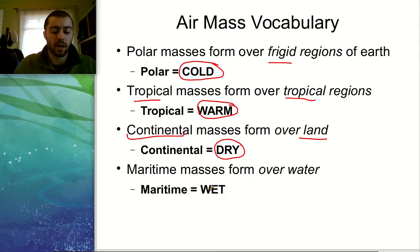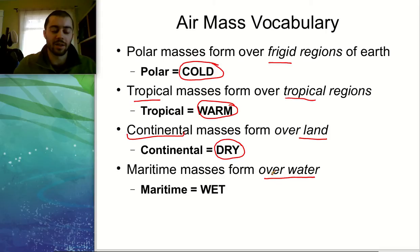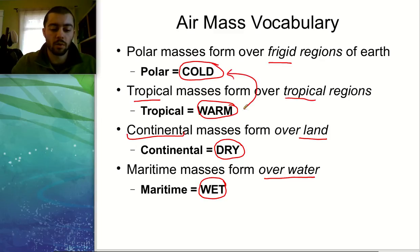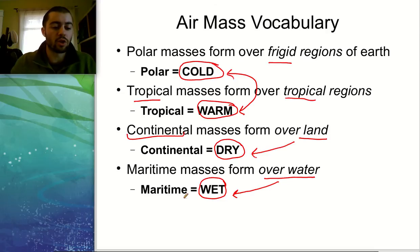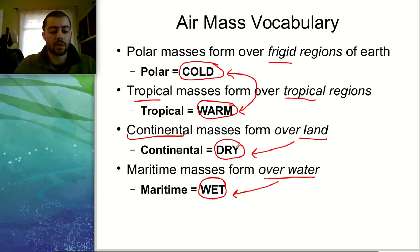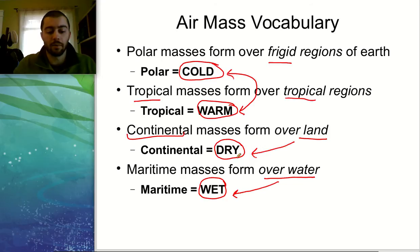The last vocab term is maritime. Maritime air masses form over water — maritime is a word usually related to something seafaring or sea-related. So maritime air masses form over water and are going to be wet. We have two pairs: polar and tropical give you cold and warm air masses respectively, and continental and maritime give you dry and wet. In a maritime air mass forming over water, there's much more moisture from evaporated ocean water, creating a wet air mass. Continental masses forming over land are much more dry because land doesn't release nearly as much moisture as bodies of water.